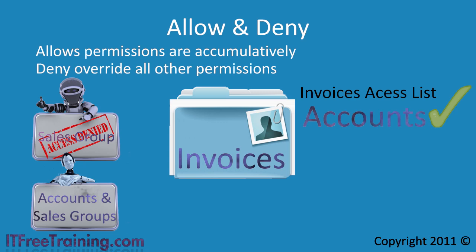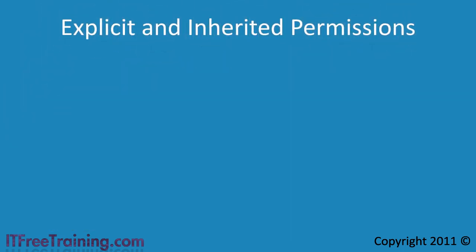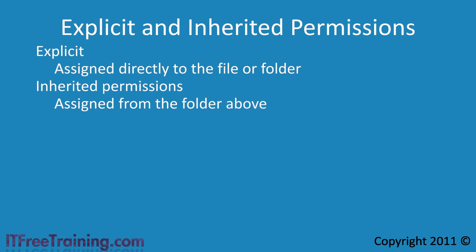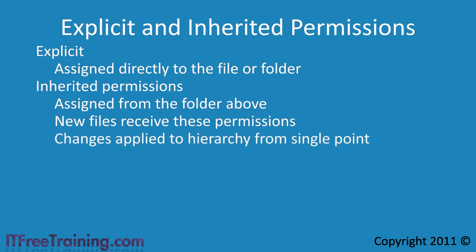Once you understand which permissions are available and how to set allow and deny permissions, the next thing to understand is explicit and inherited permissions. Explicit permissions are permissions that are assigned directly to a file or folder. Inherited permissions are permissions assigned from the folder above — new files and folders added will automatically receive permissions from that folder. The advantage of inherited permissions is that you can control NTFS permissions for a complete folder hierarchy from a single point.